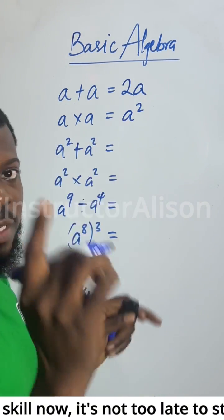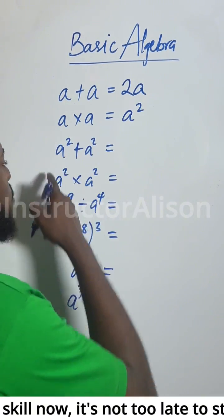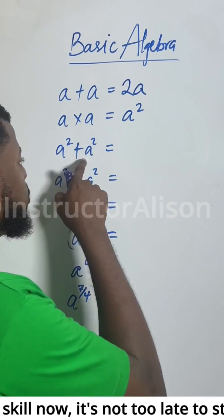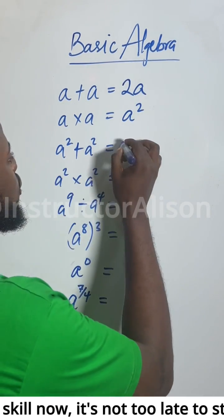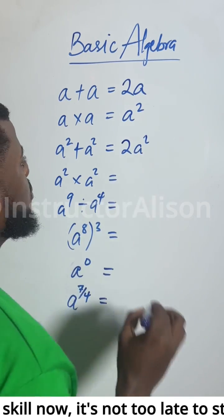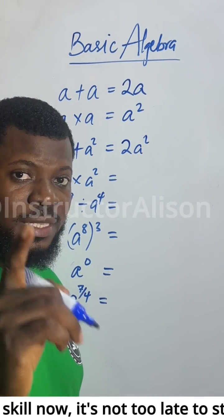A squared plus A squared. They have coefficient 1, 1. So that 1 plus 1 will give you 2. And because A squared, they are common, you just have 2A squared. Okay, I'm getting the correct here. I'm just adding what we have.